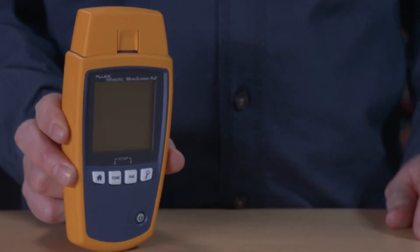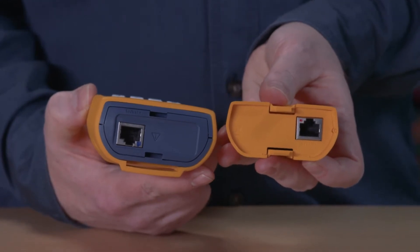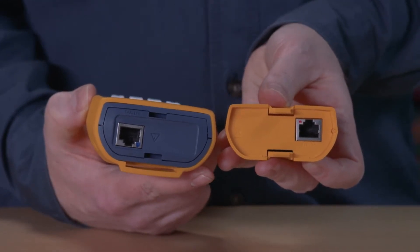On top of the Microscanner PoE is the WireMap adapter, lifted off to expose the modular jack for telephone and twisted pair network cables.